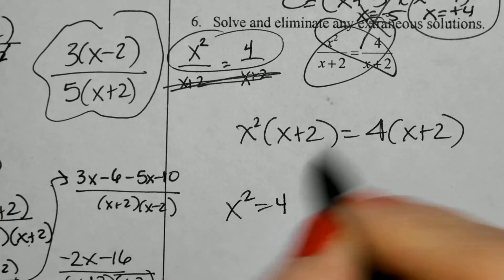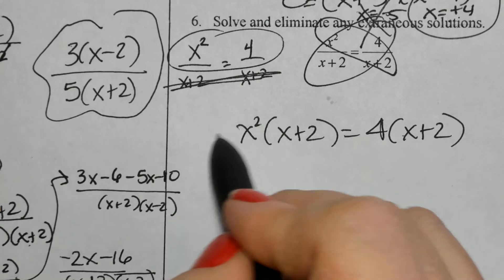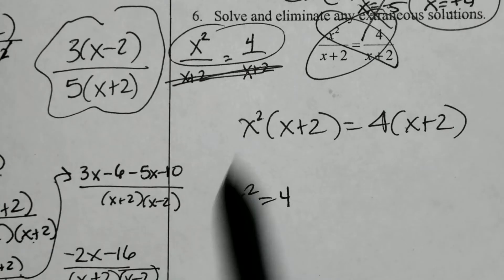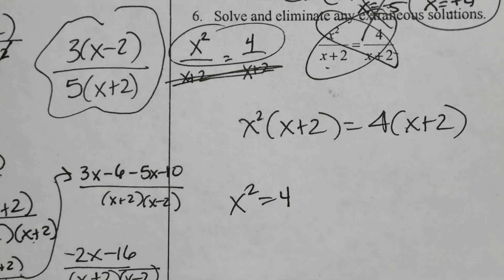So if we were solving here, I could use this method to solve, distribute, move everything to the side of the x squared factor and solve, or I can see that again the denominators are the same. I cancel them out and only solve the top.